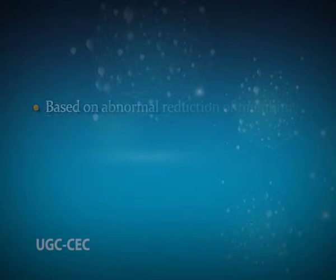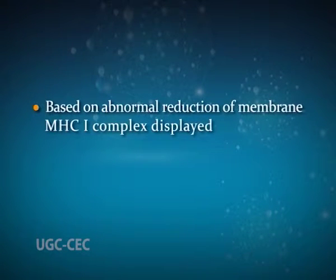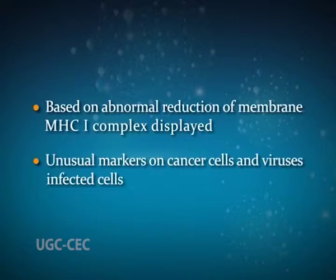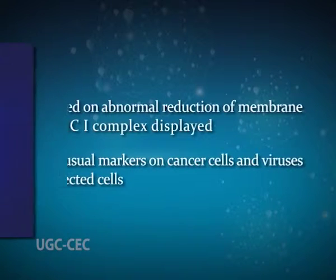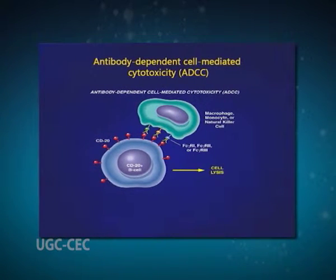Unlike cytotoxic T cells, NK cells kill target cells in the absence of specific antigen and destroy malignant and virus-infected cells without prior exposure to the antigen. NK cells recognize target cells in two ways: based on abnormal reduction of membrane MHC class I complex display and unusual markers on cancer cells and virus-infected cells, and by a process called antibody-dependent cell-mediated cytotoxicity, or ADCC.